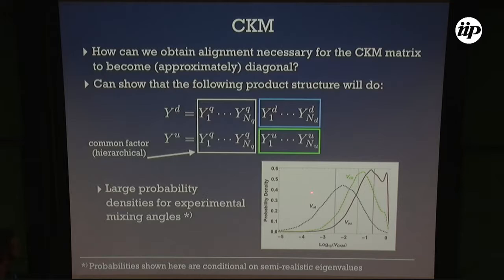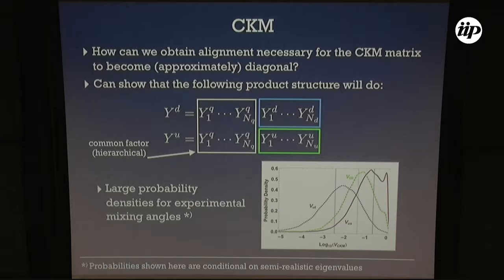In this paradigm you take the first NQ factors of the product to be identical between the up and down sectors, making them a common hierarchical factor. The simulation — approximately n=5 — shows the three independent CKM entries developing broad but clearly non-generic distributions, with distinct peaks for the large, medium, and small mixing angles.